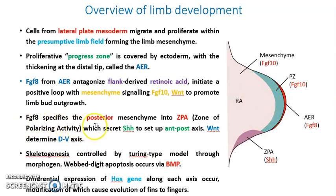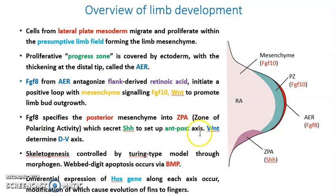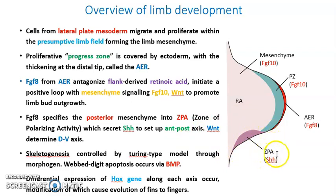FGF8 specifies the posterior mesenchyme into the ZPA, or zone of polarizing activity, which secretes Sonic Hedgehog to set up the anterior-posterior axis. This posterior mesenchyme region, the ZPA, secretes Sonic Hedgehog and is responsible for anterior-posterior axis formation.